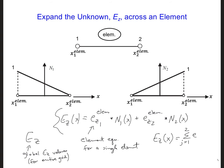And we can take lowercase Ez_j for the element, that subscript will change with the node, multiplied times N_j of x.